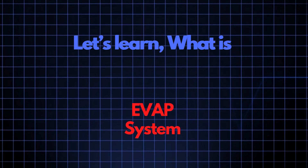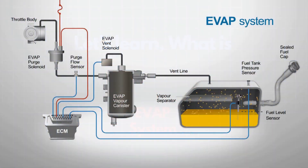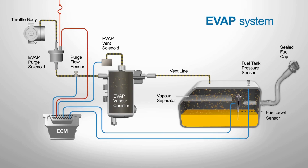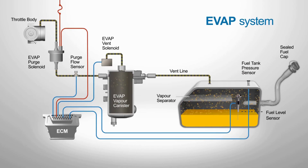Now let's take a quick look at how the EVAP system works. The purpose of the EVAP system is simple but vital: it's designed to prevent fuel vapors from escaping into the atmosphere, which helps reduce air pollution. Basically, it's a collection of components that create a sealed environment, capturing, storing, and eventually purging volatile fuel vapors from the fuel system.